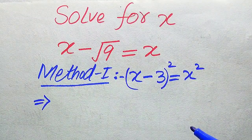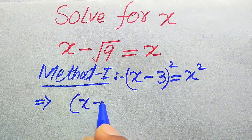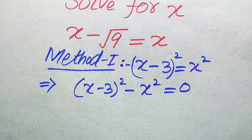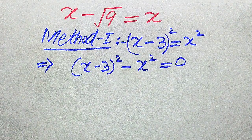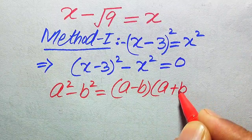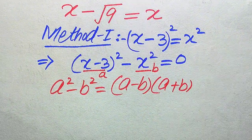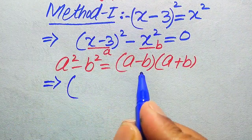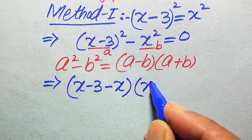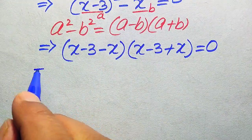In the next step, we move the right hand side to the left hand side. It becomes (x minus 3) whole squared minus x squared equals zero. We use the algebraic formula: a squared minus b squared equals (a minus b)(a plus b). Here, a is (x minus 3) and b is x. So we write: (x minus 3 minus x) times (x minus 3 plus x) equals zero.